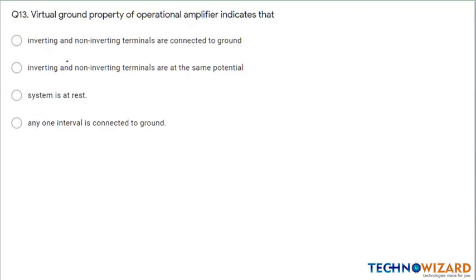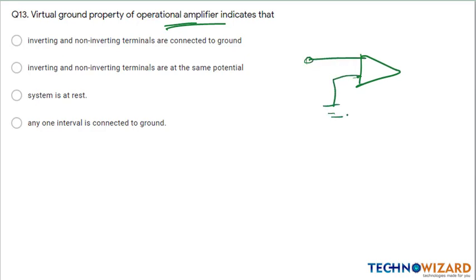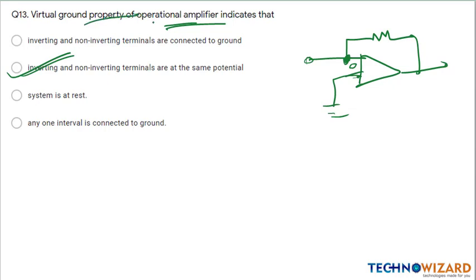Next question: what is the virtual ground property of an operational amplifier? In virtual ground theory, both the inverting and non-inverting terminals have the same potential — we take this as 0. Therefore the inverting and non-inverting terminals are at the same potential in the virtual ground property of an op-amp.